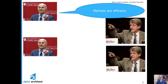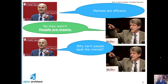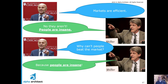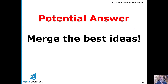In 2013, the Nobel Prize was awarded to Professor Fama, Professor Shiller, and Lars Hansen. The compelling narrative is between Fama — the archetype of the efficient market hypothesis — and Shiller, who says markets are pretty irrational and people are nuts. Fama says markets are efficient; Shiller says no, because people are crazy. Fama asks why no one can beat the market; Shiller responds because people are insane. Having a Nobel Prize doesn't mean you have the definitive answer.